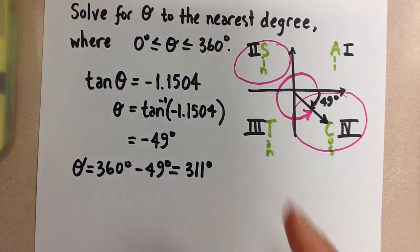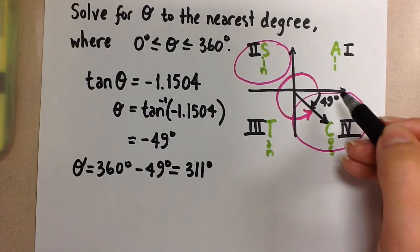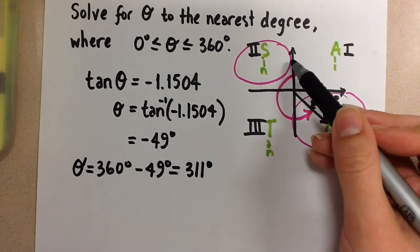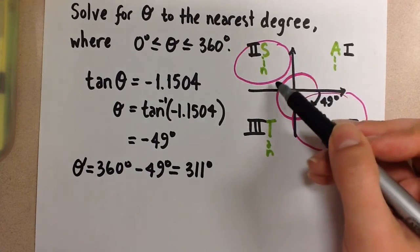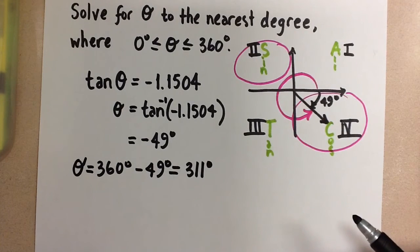But we know that we need another angle that falls between 0 and 360 degrees. And that second angle is going to fall in the second quadrant, because that's where the tangent ratio is also negative.